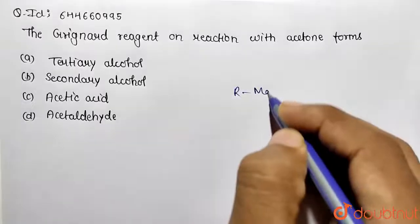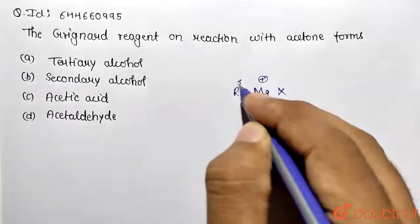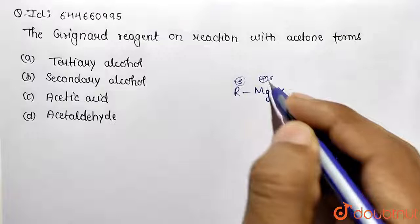This is R-Mg-X compound. So Mg is positive, delta positive, and this is delta negative. So these are the representations of Grignard.